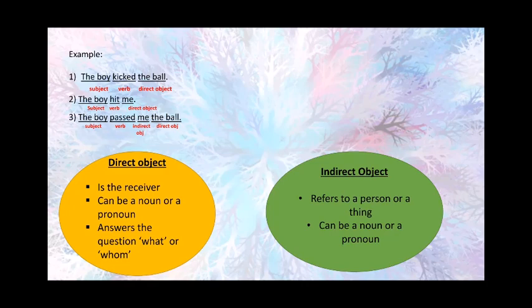Me is the indirect object, whereas the ball is the direct object. Me is an indirect object because here something is being received. And the ball is a direct object because it is affected by the subject's action. Always remember: the indirect object refers to a person or a thing, whereas the direct object is the receiver of the action. Both indirect and direct objects can be a noun or a pronoun. The key difference is that the direct object is the receiver of the action, whereas the indirect object is the person or thing on whom the action is being done.